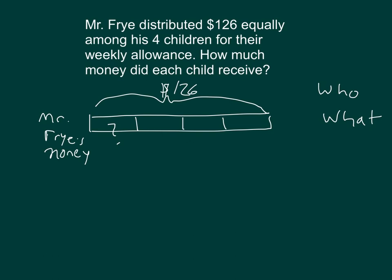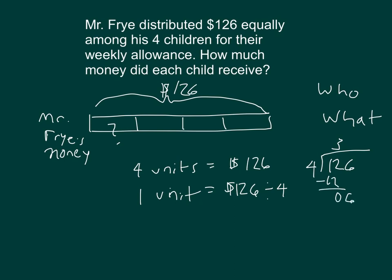How many of these unit bars is equal to 126? Right, four. So four units equals 126. So one unit is going to be $126 divided by four. And let's do that work. Four goes into 12, three whole times. Three times four is 12. 12 minus 12 is zero. Bring down the six. Six divided by four is one. One times four is four. Six minus four is two. I'll add some decimal places. 20 divided by four is five. So it's $31.50 for one unit. Each child receives $31.50.